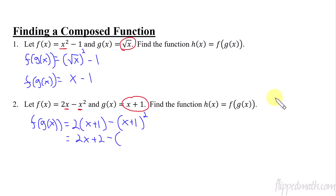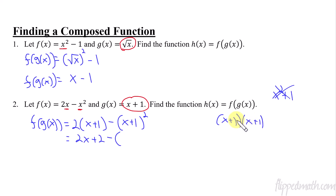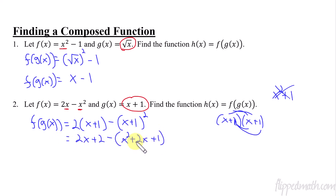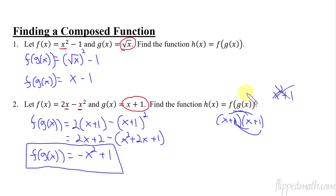Now what is x plus one quantity squared? Please don't say that it's x squared plus one — that is not what this is. What it means is x plus one times x plus one. So if you distribute, or foil however you want to do that, it becomes x squared plus two x plus one. Then you distribute that minus, simplify, combine like terms, and you end up with negative x squared plus one. The two x terms end up canceling. So that is the composed function.